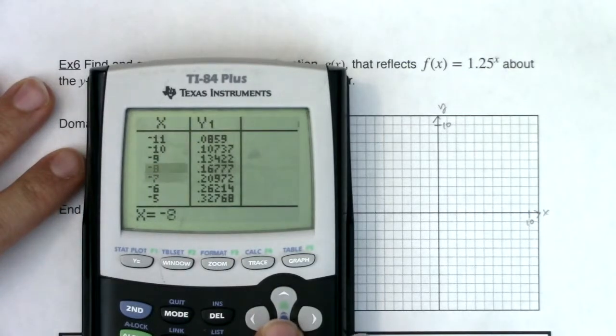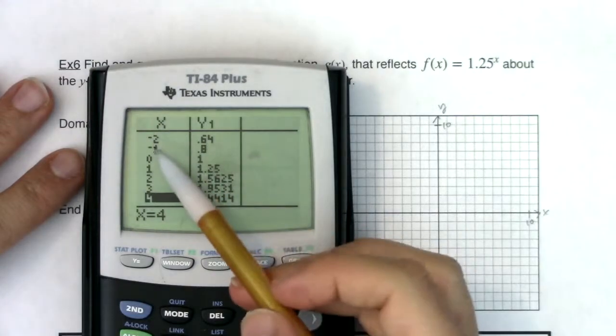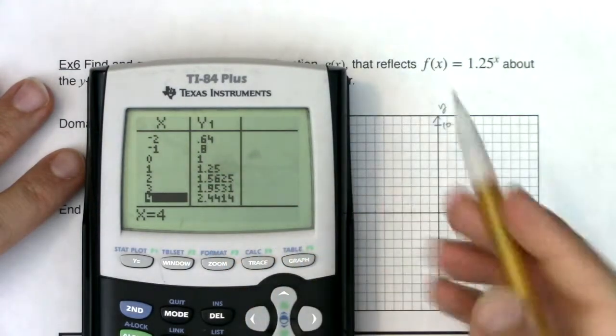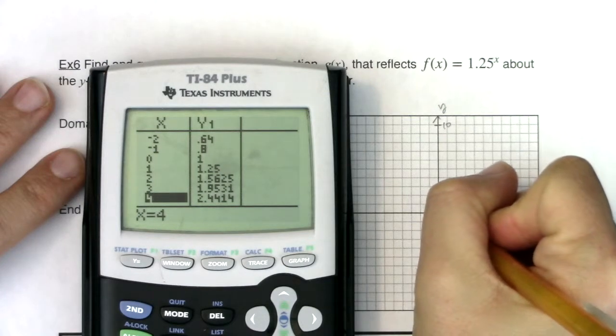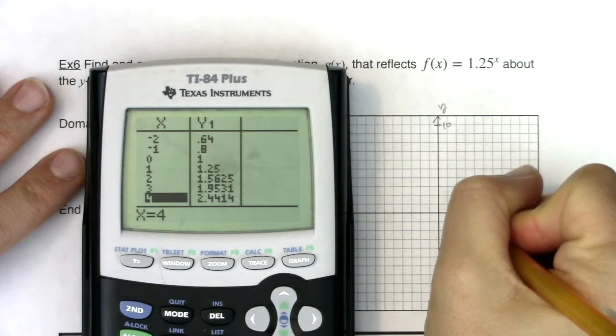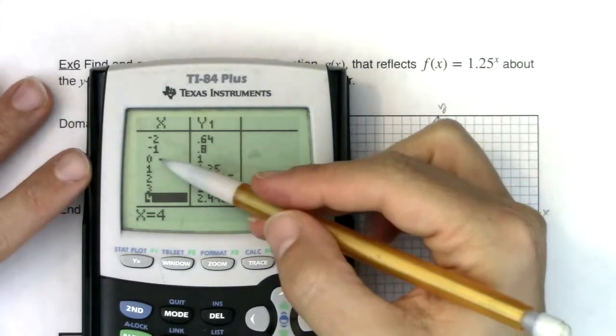So I'm going to scroll down a bit till I find some reasonable numbers. So I'll start in on here. I see the ordered pair negative 1.8. So on my original graph, I'd be at negative 1.8. When I reflect that over the y-axis, I'll be at positive 1.8.